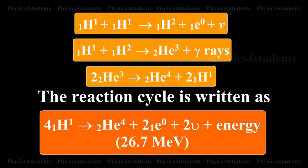Thus, four protons fuse together to form an alpha particle and two positrons with the release of large amount of energy.